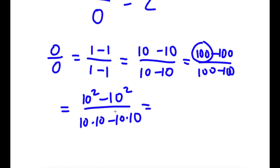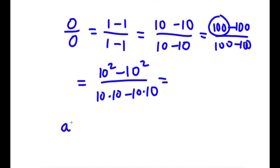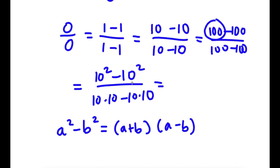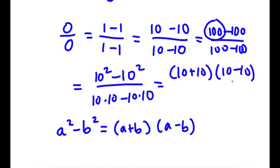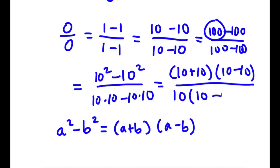If I have something in the form a squared minus b squared, this is equal to a plus b times a minus b. So 10 squared minus 10 squared equals 10 plus 10 times 10 minus 10. This is completely legal — I'm just using a property of exponents. For my denominator, I'm going to factor out 10, so I get 10 times 10 minus 10.